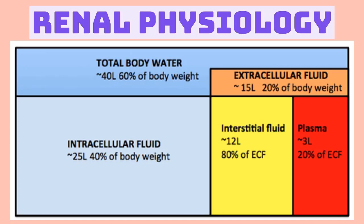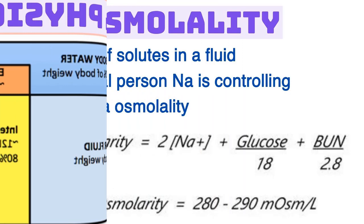These Darrow-Yannet diagrams are very commonly asked on boards in relationship to different fluid abnormalities — I have a question on them in my fluid and hemodynamics questions. The height of the squares is the osmolality of plasma, and the width is the volume in each chamber. If you had a low plasma osmolality, the height would be lower. If ECF volume increased, it expands outward; if ICF volume increased, it expands the other way. The x-axis is volume; the y-axis is plasma osmolality.